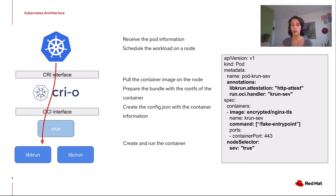CRUN already has support for libkrun in order to run more isolated containers using KVM. In order to deploy a regular container with CRUN, it uses another library called libcrun. In the example on the right, the important fields are highlighted in bold. Annotations are a standard way in Kubernetes to pass additional information. The first annotation contains the HTTP endpoint of the attestation server. The second annotation is already used by CRUN and allows us to select the right library to deploy either a containerized workload or a confidential workload.